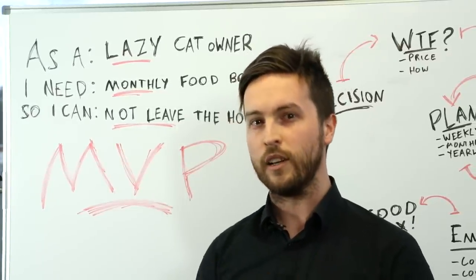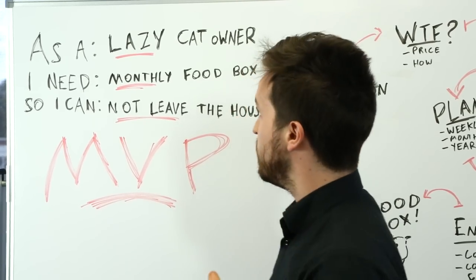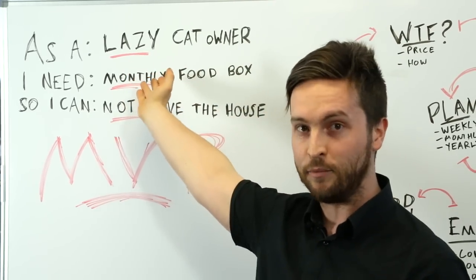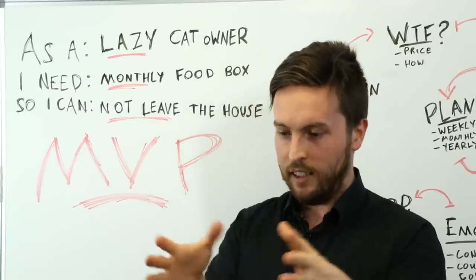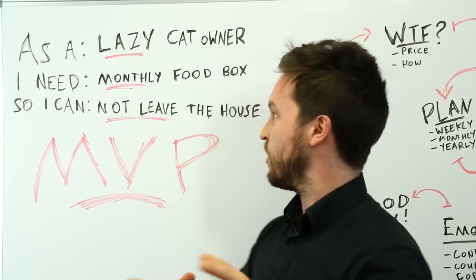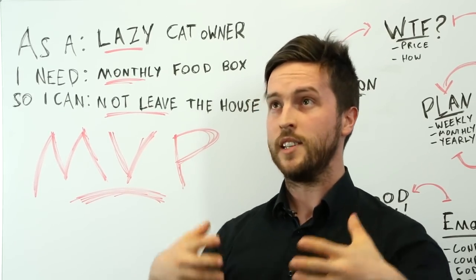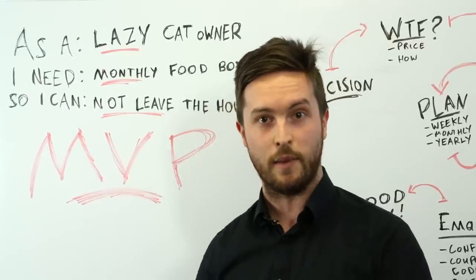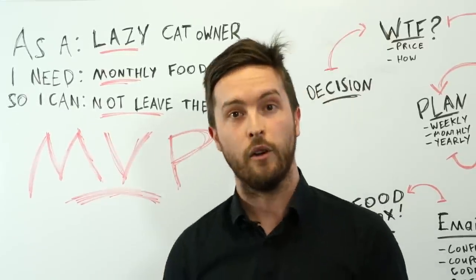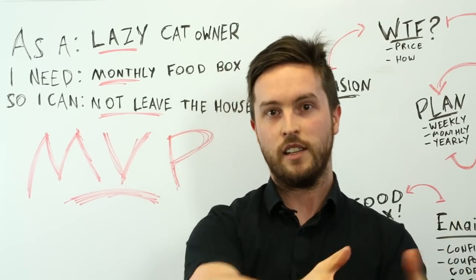This user storyline is kind of a cool idea but we need to give it a lot of texture. So we need to be like as a lazy cat owner I need a monthly food box so that I don't have to leave the house. You can see it's a very different thing from as a crazy cat lady I need four tons of food so I can feed all of the cats in my house or as a new cat owner I need kitten food to feed my little baby child thing that is actually a cat.